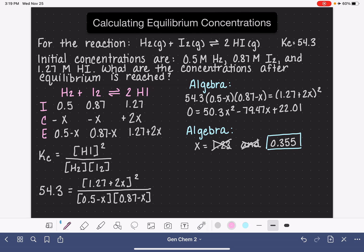Now that we know the value of X, we are able to plug that into each one of the expressions that we came up with in the E row on the ice table. So for H2, our concentration is going to be 0.5 minus X, which is 0.355. At equilibrium, our concentration is 0.145 molar. For I2, the expression that we came up with was 0.87 minus X, 0.87 minus 0.355. At equilibrium, our I2 concentration is going to be 0.515.